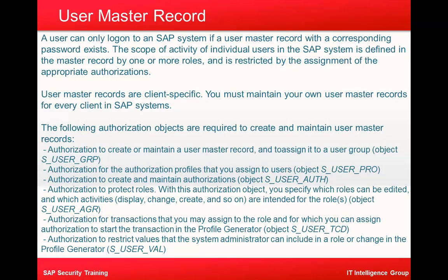A user can only log on to an SAP system if a user master record with a corresponding password exists. The scope of activity of individual users in the SAP system is defined in the user master record by one or more roles and is restricted by the assignment of appropriate authorization. User master records are client specific — you must maintain your own user master record for each and every client. The first authorization object required is S_USER_GRP, which is for the authorization to create or maintain a user master record and to assign it to a user group.